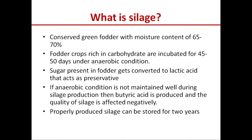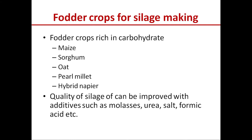Properly produced silage can be stored for two years. It is the lactic acid and the low pH produced in the silage that conserves it for two years. Fodder crops suitable for silage making are those rich in carbohydrate, such as maize, sorghum, oat, pearl millet, hybrid napier, and many other grasses.